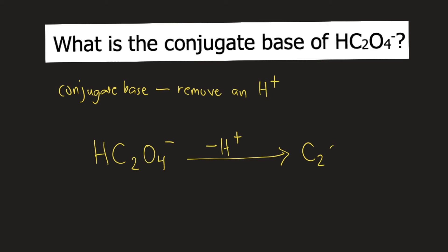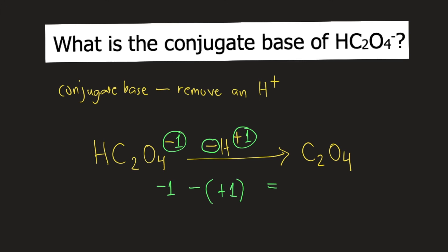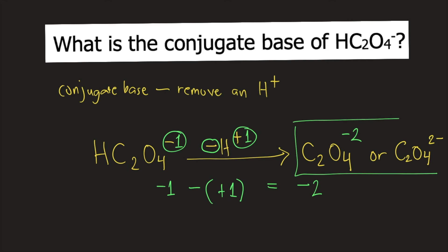It becomes C2O4. But this is not yet the answer — we need to find the charge of C2O4. The charge of HC2O4- is negative 1. So negative 1 minus the charge of H+, which is positive 1, equals negative 2. So the charge of C2O4 is negative 2. You can write this as C2O4 2- or 2 negative. Both are correct answers.